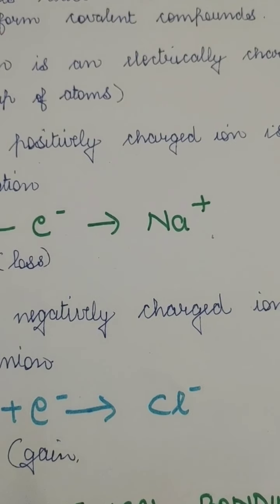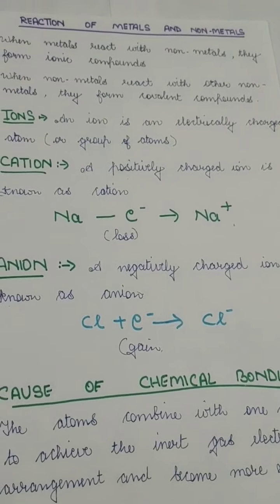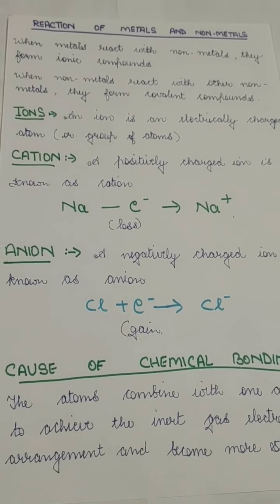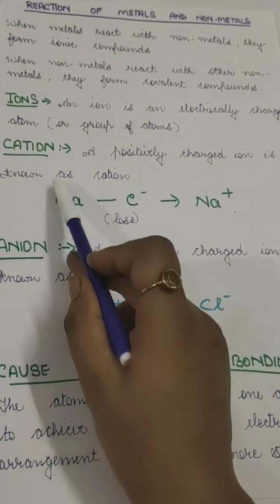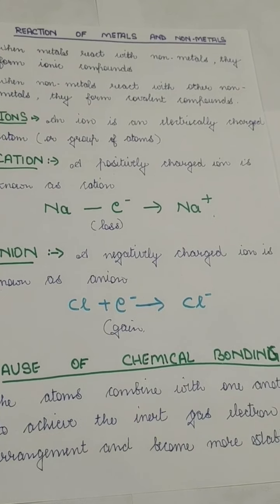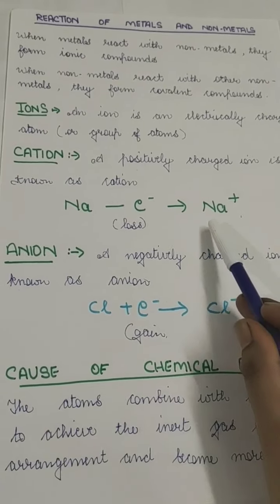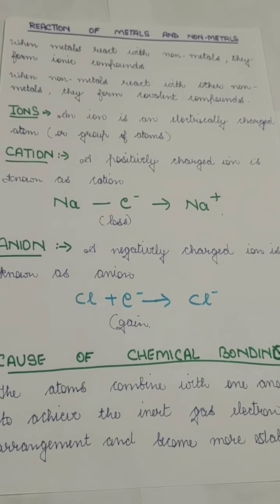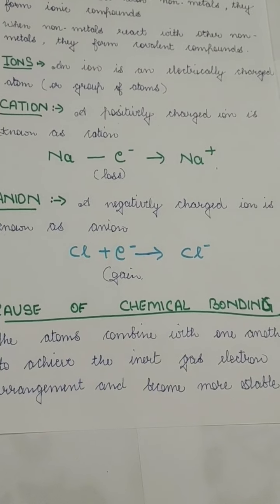Before I start, I would like you to revise the terms which you have already read in class 8th and 9th. An ion is an electrically charged atom. Whenever an atom either donates or accepts any electron, it becomes charged - when it acquires a charge on it, we call it an ion. A cation is a positively charged ion - when any atom donates an electron, it becomes a positive ion. An anion is a negatively charged ion - whenever an atom accepts an electron, it becomes negatively charged. These terms you should always remember.